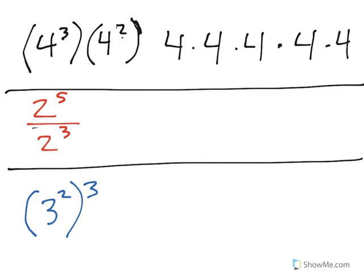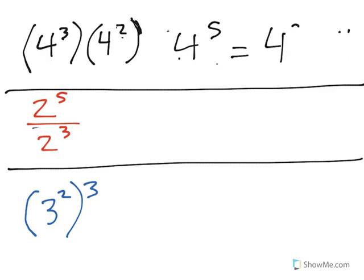So as you can see, we actually have 4 to the fifth power. Basically when you have something like this, you actually have 4 to the third power plus the second power.